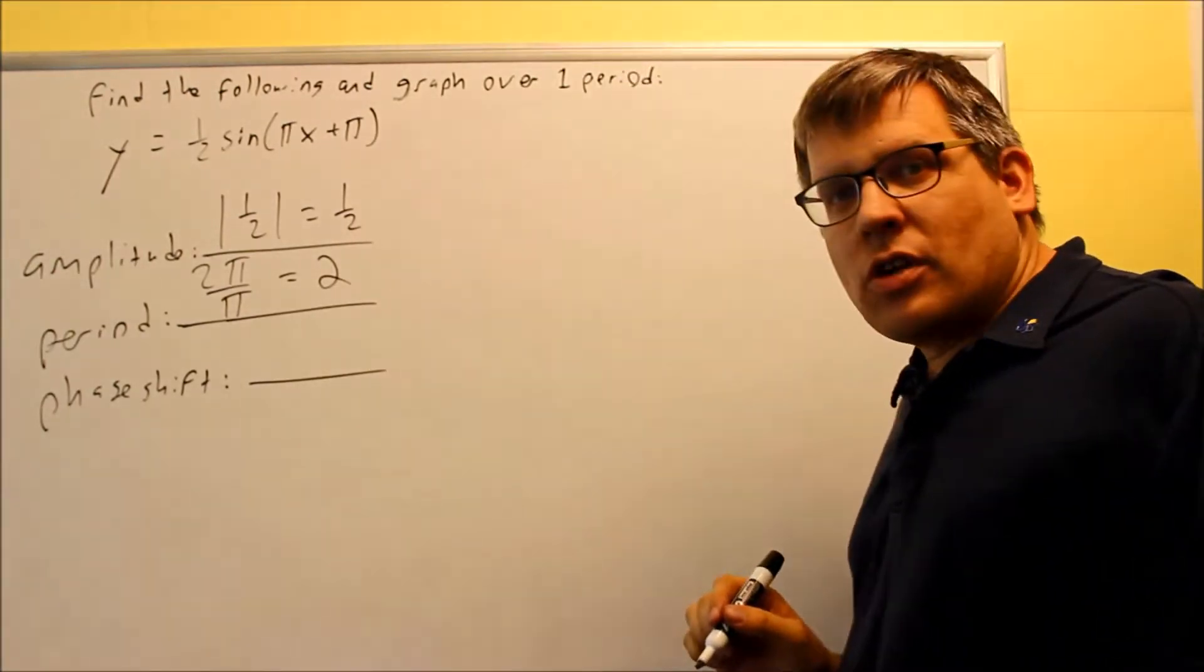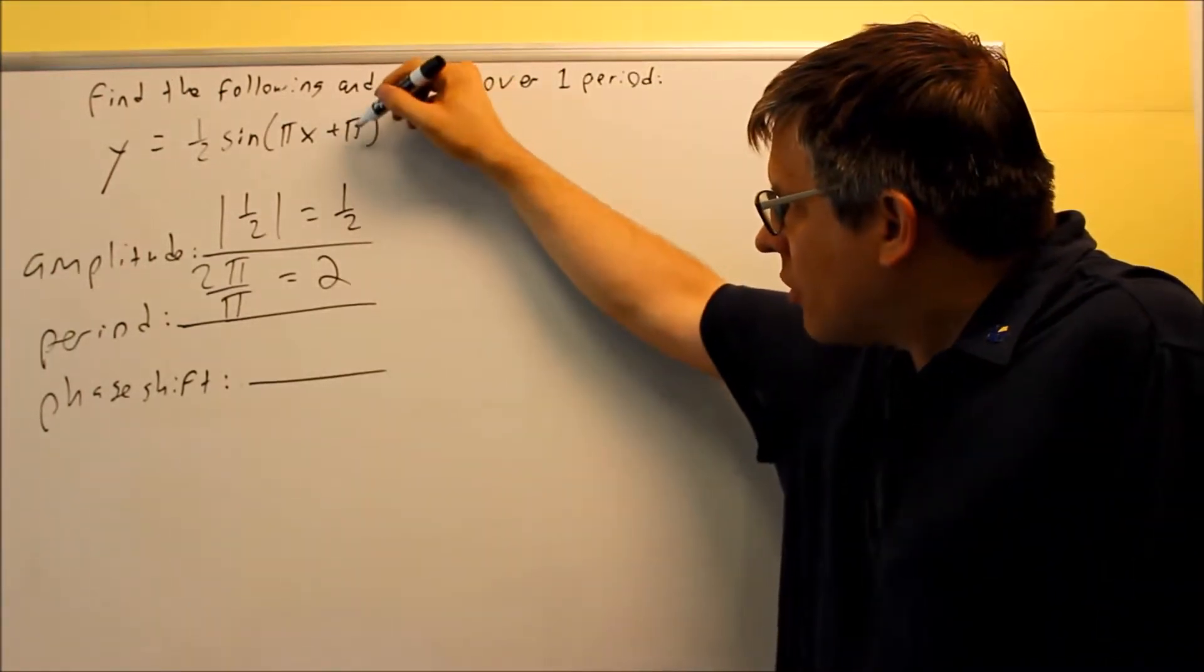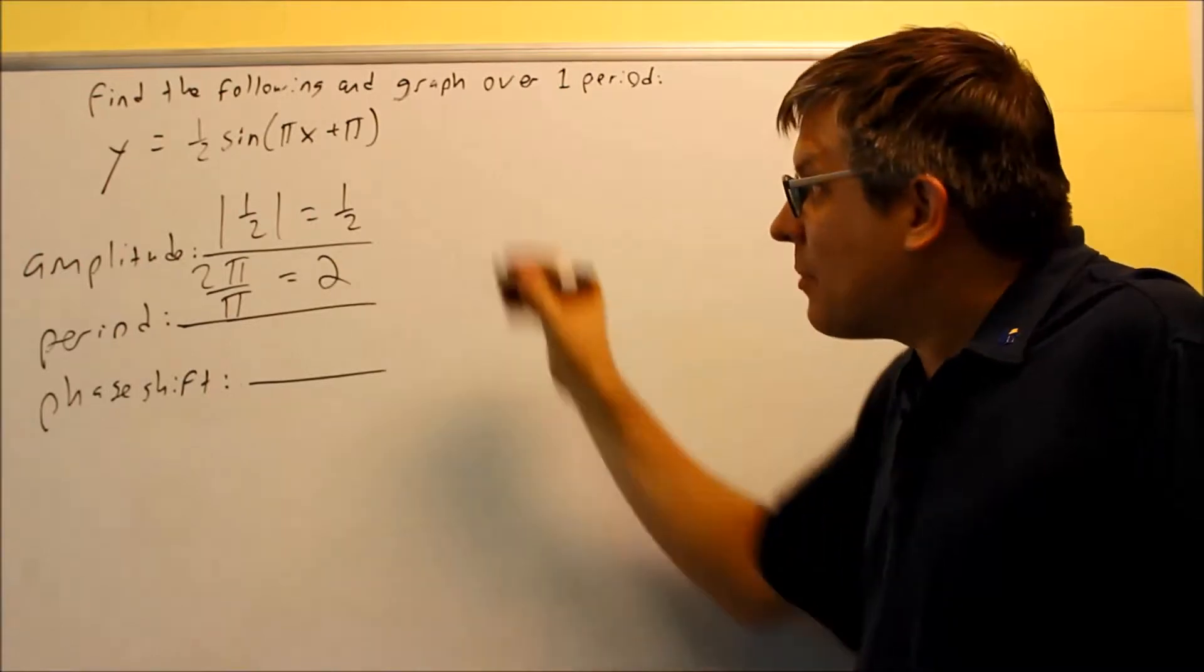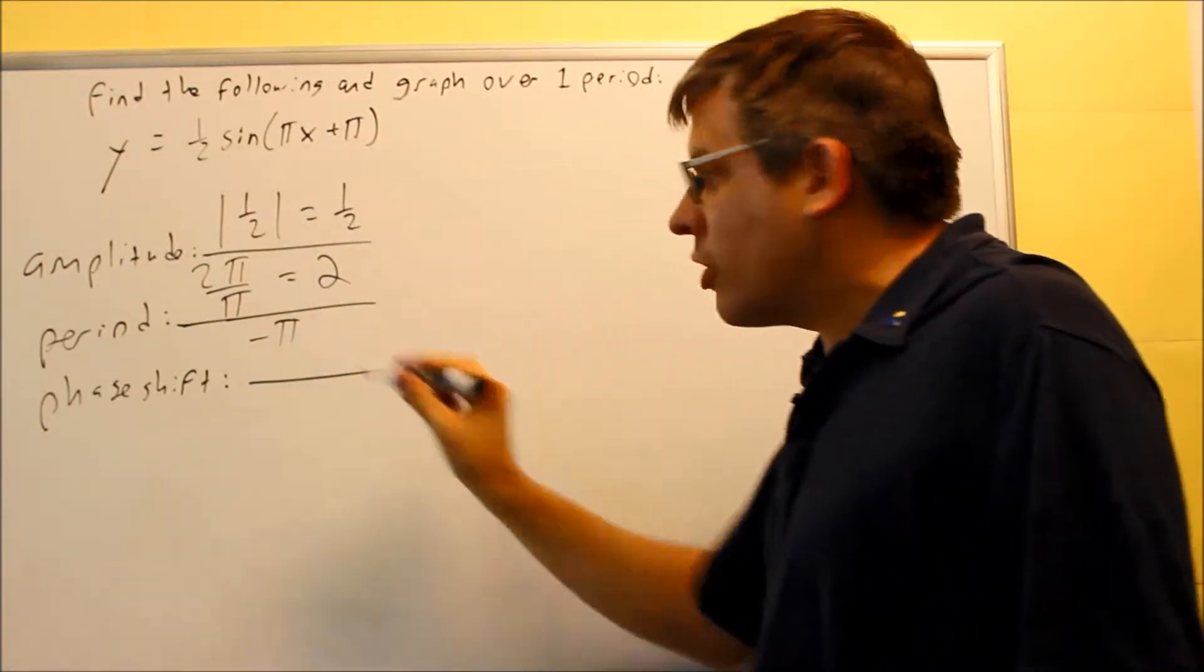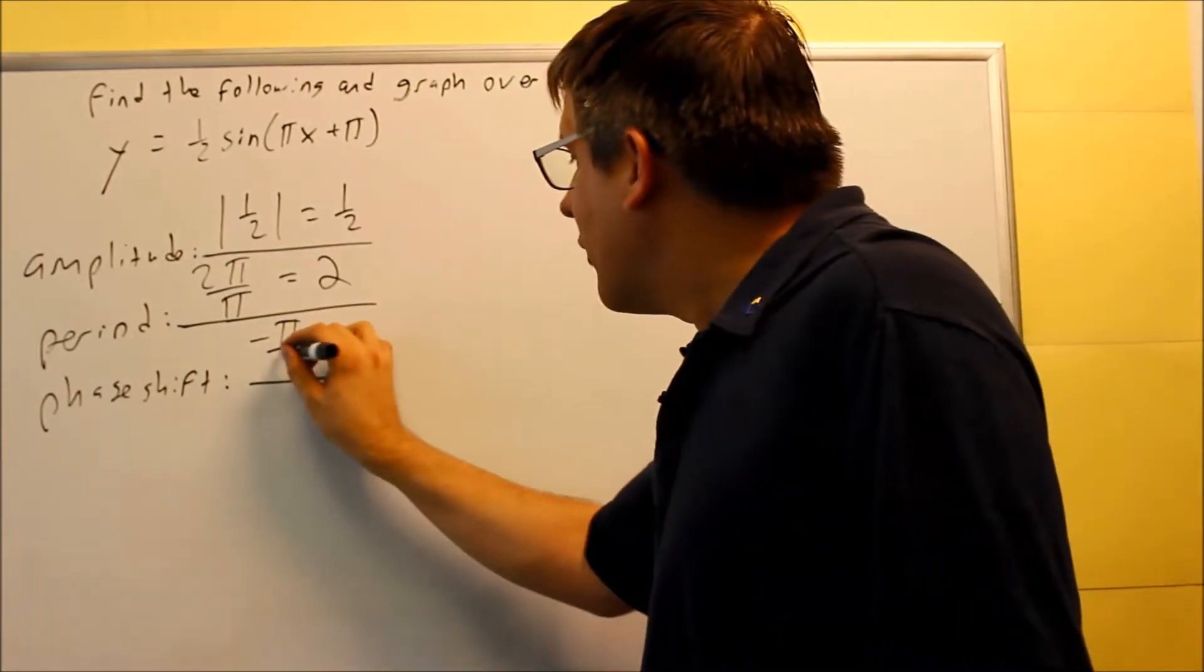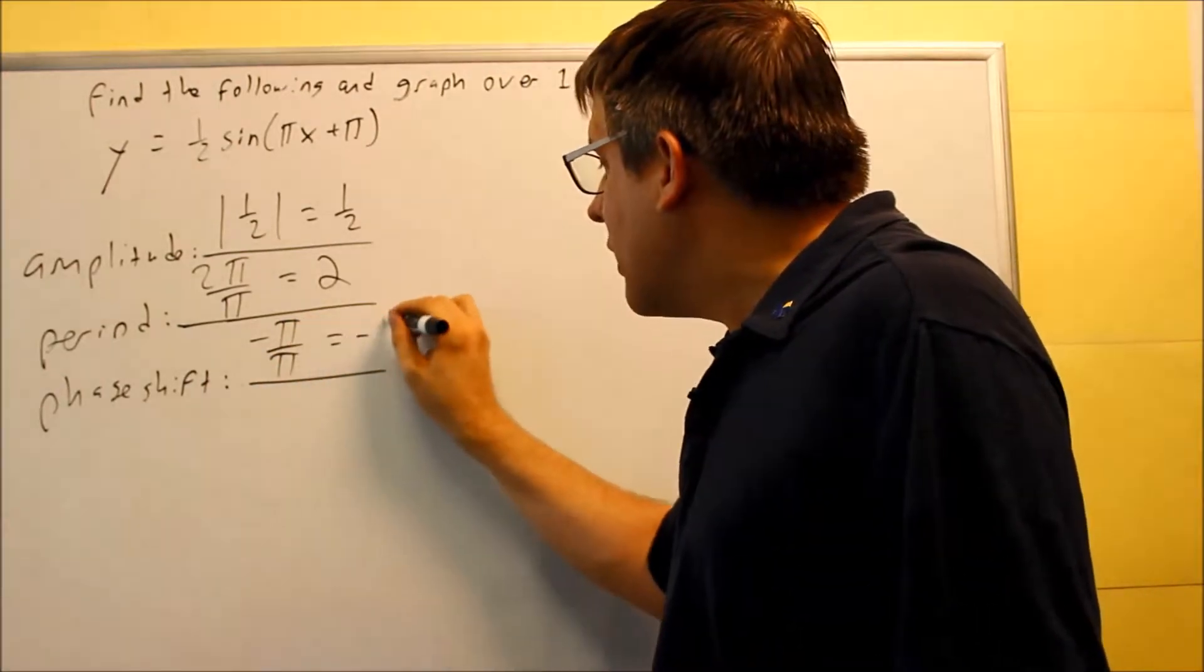Your phase shift is the opposite sign of this number divided by the number in front of the x. The opposite sign of that is negative π. It was a plus, we're going to make it negative π. If I divide that by the number in front of the x, I get negative 1.